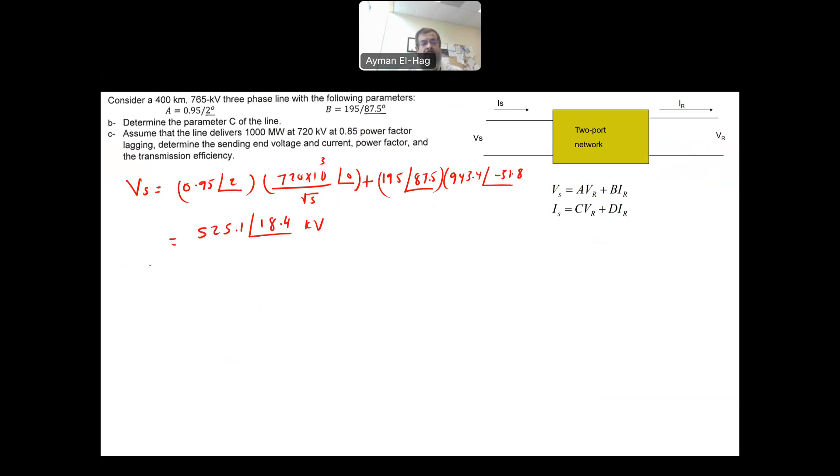So when you plug in the numbers, you get 525.1 angle of 18.4 kilovolts. Now, this is the phase voltage. If you want to find your VS line to line, just multiply this with root 3 if you want to have the magnitude for this. 525 angle of 18.4. Okay. So this is your VS.